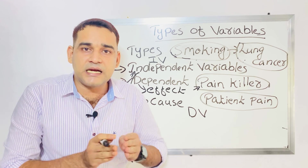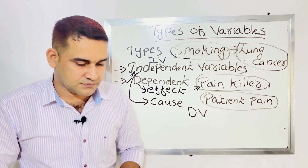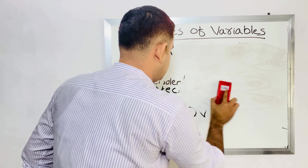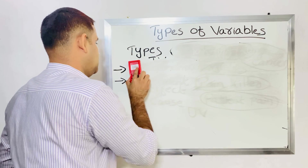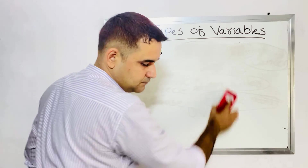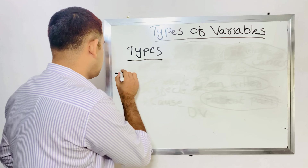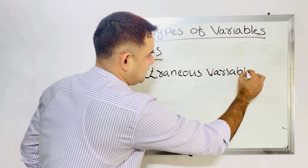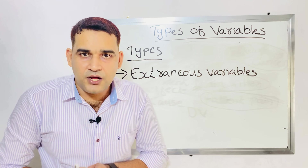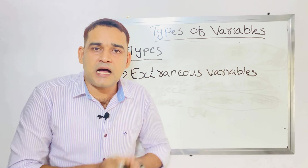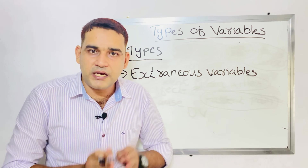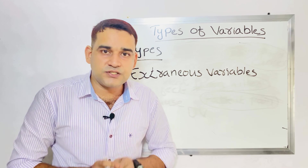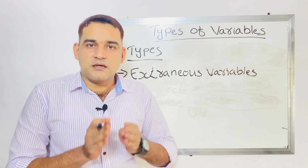Next we can see another classification — the third classification of variables — that is extraneous variable. Extraneous variables are not part of our study, but they will affect the dependent variable or the study result.